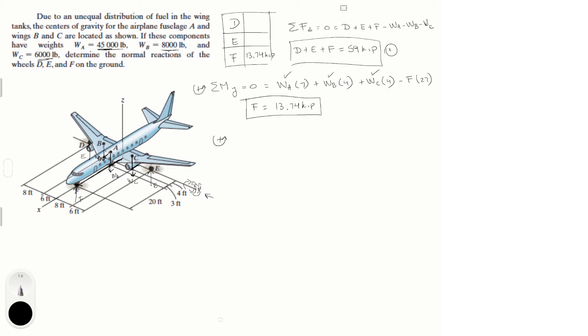So, let's find another one. Now, I'm going to do sum of the moments about the X-axis is equal to zero. The only forces creating moments about the X-axis are D, WB, WC, and E. A and F are not creating any moment about the X-axis because they're sitting right at the XZ plane. So, they're not creating any moment.